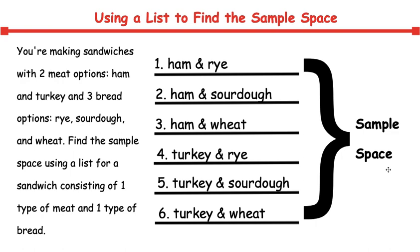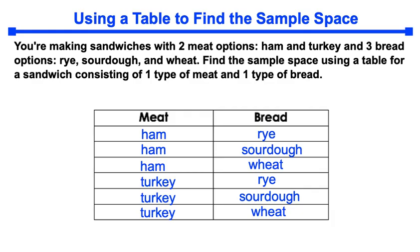Now we solve this question by making a list. However, it can also be represented in a table and here's what it looks like. This is the same question just presenting the sample space in a different format in a table. So here we have ham paired with rye bread, ham again with sourdough, ham with wheat, turkey and rye, turkey with sourdough and turkey with wheat.